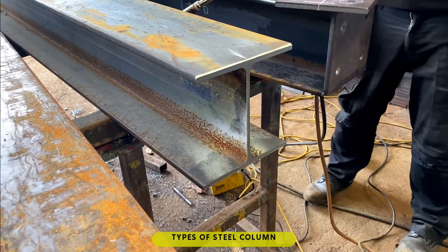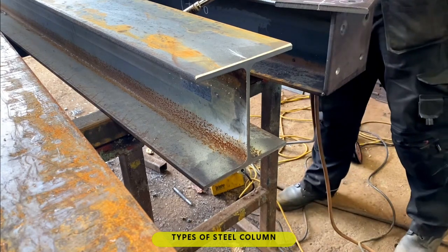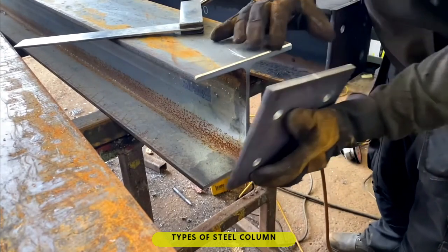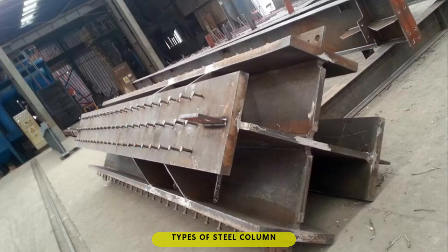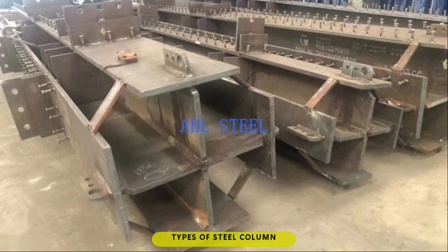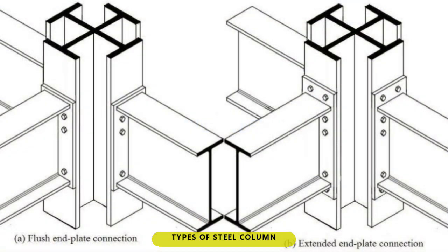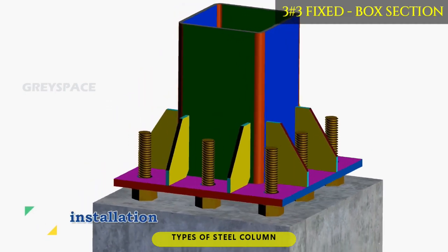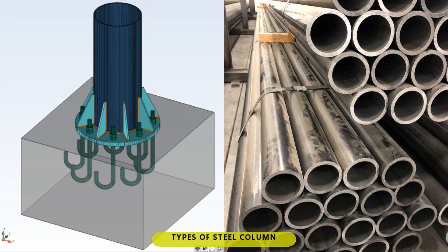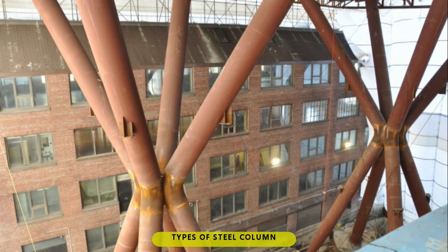Types of steel column. 1. Wide flange, also known as H-beam, wherein the length of the flanges is equal to the depth of the web. 2. Cruciform: made up of two I-beams, wherein the first is cut longitudinally on the midspan of its web, then welded perpendicularly on the longitudinal midspan web of the second I-beam on both sides, to form a cross-shaped section of a column. 3. Square or rectangular tubing: a hollow box structural steel column. 4. Round pipe: a hollow circular structural steel column.